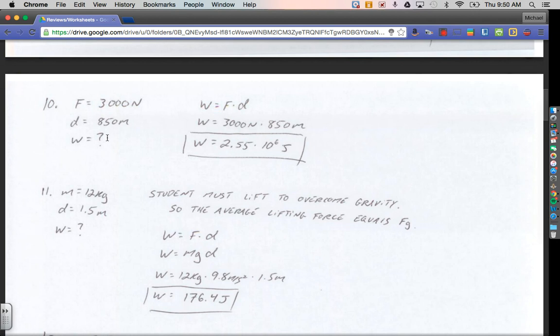There's no angle in between the force and the distance, so cosine of zero is just one, so we can forget about it. Work equals force times distance. The force is 3,000 newtons, the distance was 850 meters, giving us a total amount of work of 2.55 times 10 to the sixth joules.